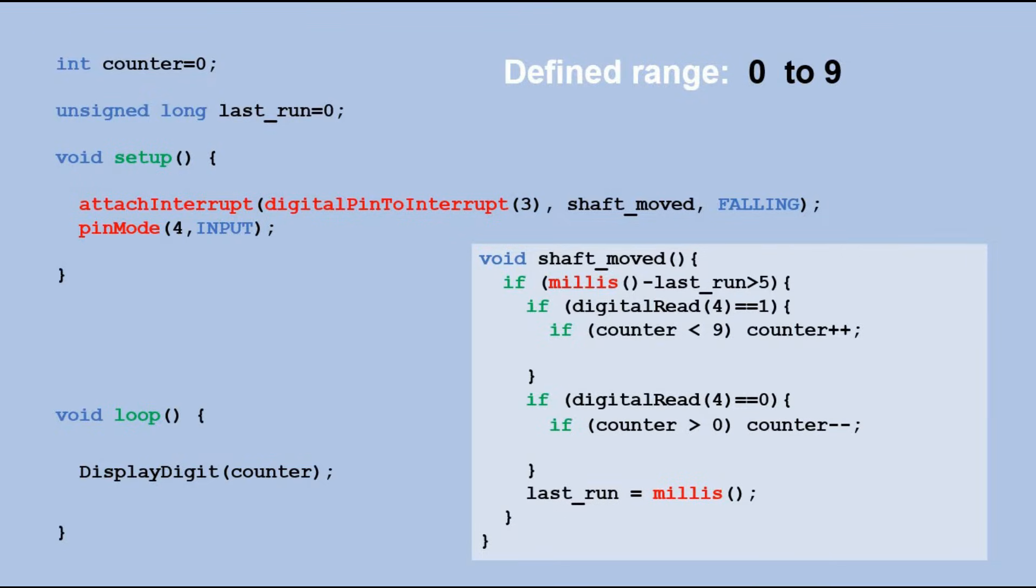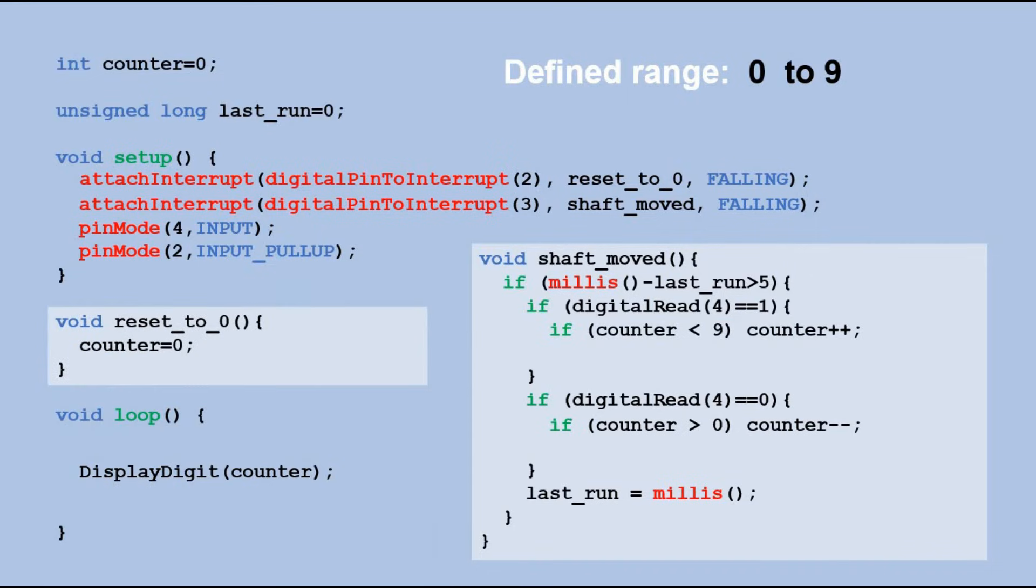We need to program the push button. To do it we define the second interrupt on digital pin 2 which is the pin to which we connected SW pin of rotary encoder. It is also triggered upon the change of the signal from high to low. Since the push button is active low we need to activate build in pull up resistor for the digital pin 2. We do it by declaring this pin as input pull up. This interrupt has a different interrupt service routine called reset to 0 which resets counter value back to 0.